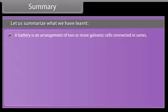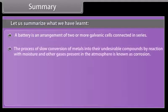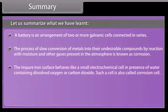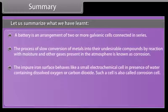A battery is an arrangement of two or more galvanic cells connected in series. The process of slow conversion of metals into their undesirable compounds by reaction with moisture and other gases present in the atmosphere is known as corrosion. The impure iron surface behaves like a small electrochemical cell in presence of water containing dissolved oxygen or carbon dioxide. Such a cell is also called corrosion cell.